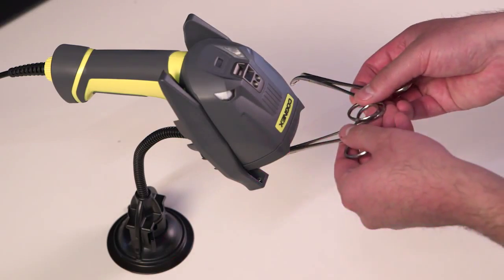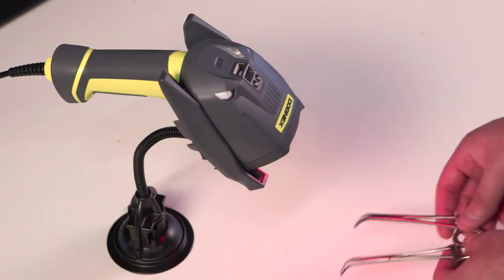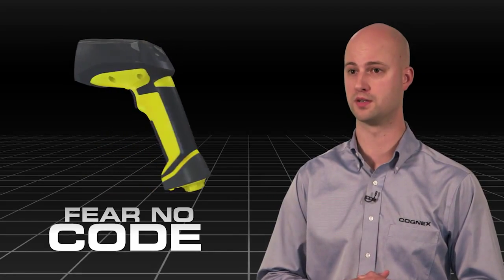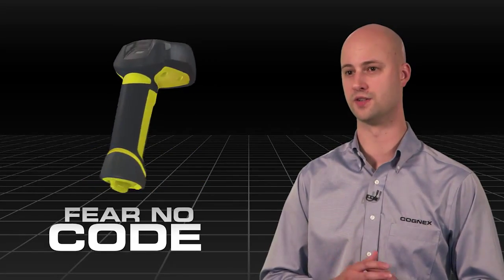We can also see challenging-to-read codes in surgical instruments, where those are actually direct part mark, but of course they're highly reflective and often curved as well.